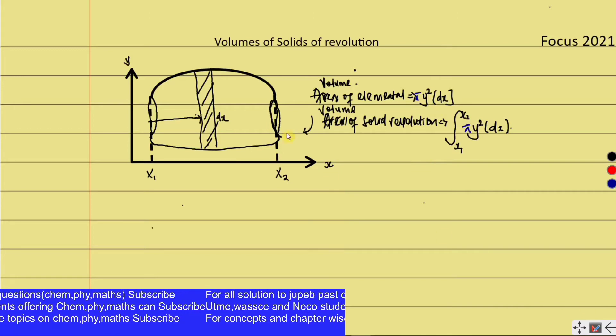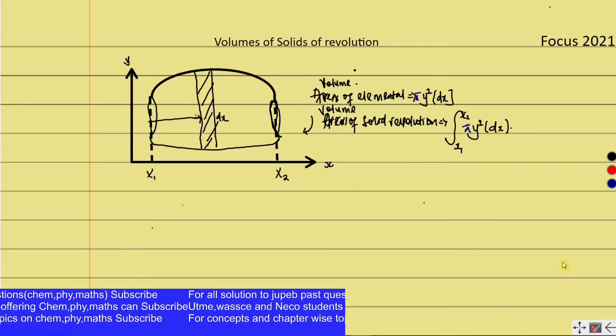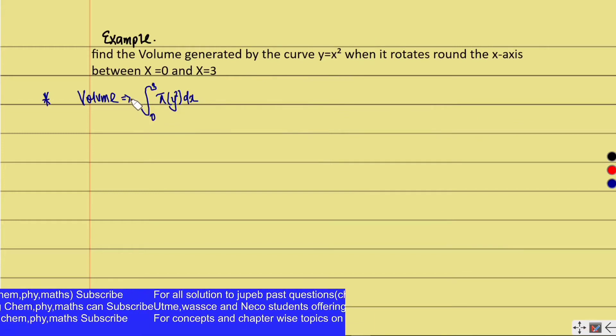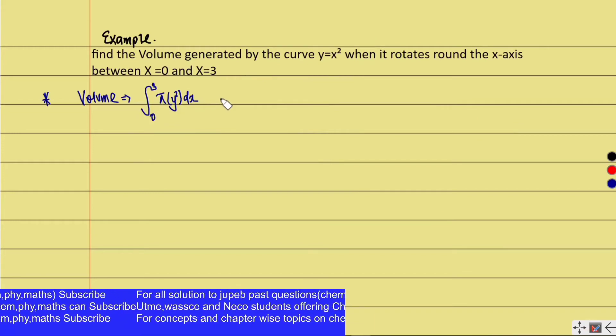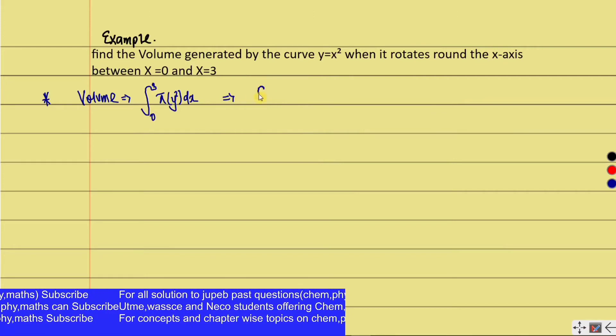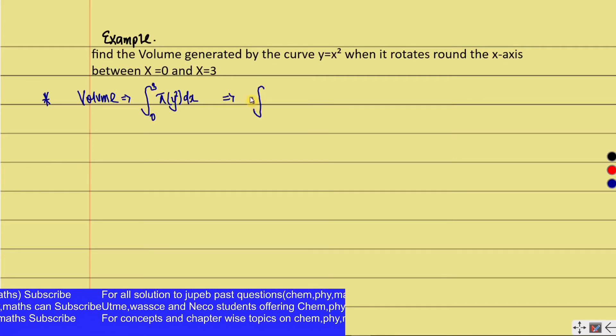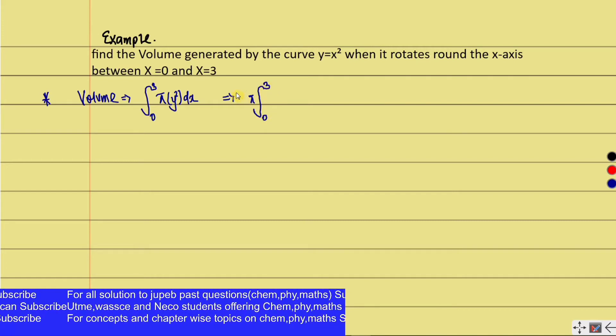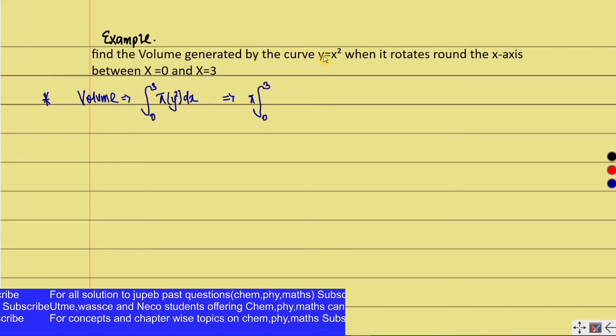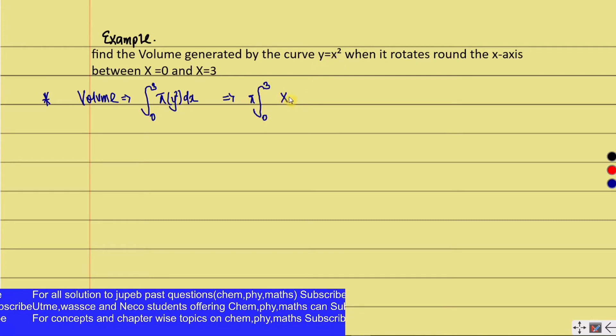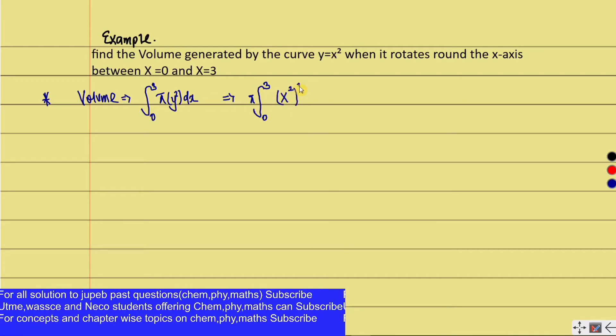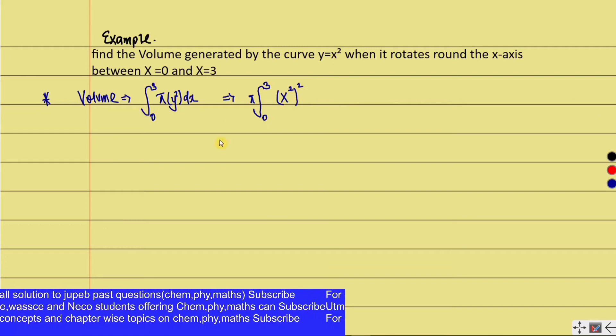From the formula, we cannot integrate π, so we write it outside. We have π times the integration from 0 to 3 of y² dx. In this question, y was given to be x², so y² = x⁴.